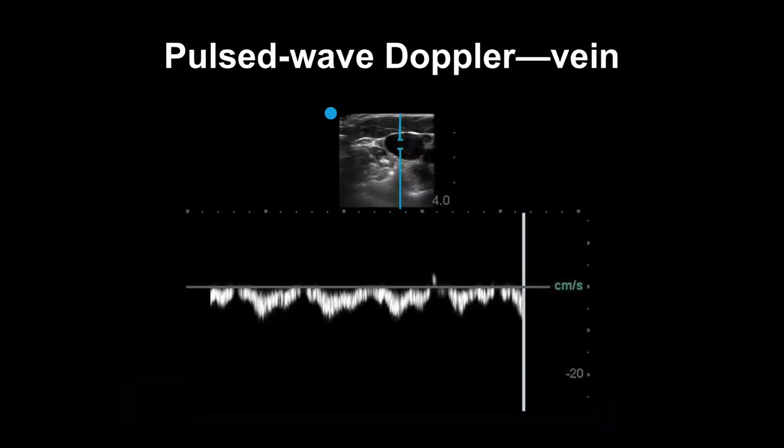Here's an example of pulse wave Doppler in a vein. This is lower velocity than the artery and has a more undulating baseline than the spikes that you saw associated with pulse.